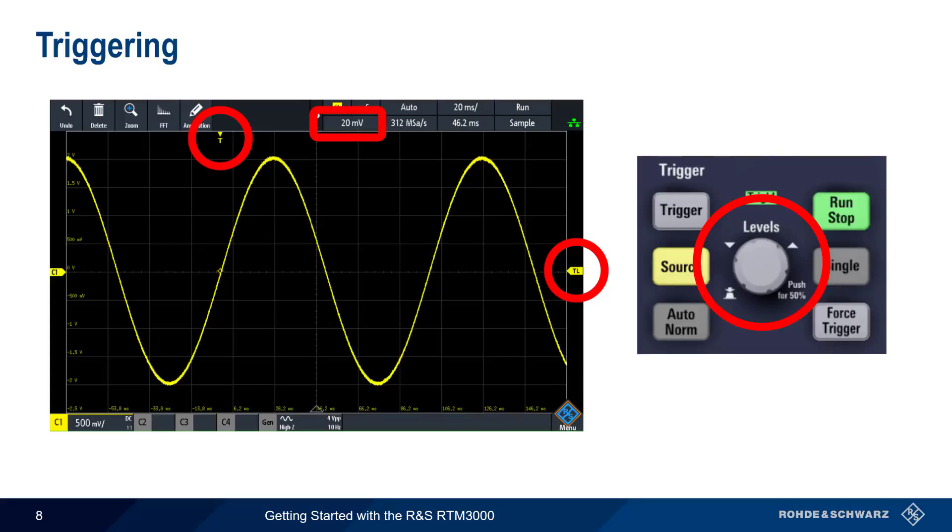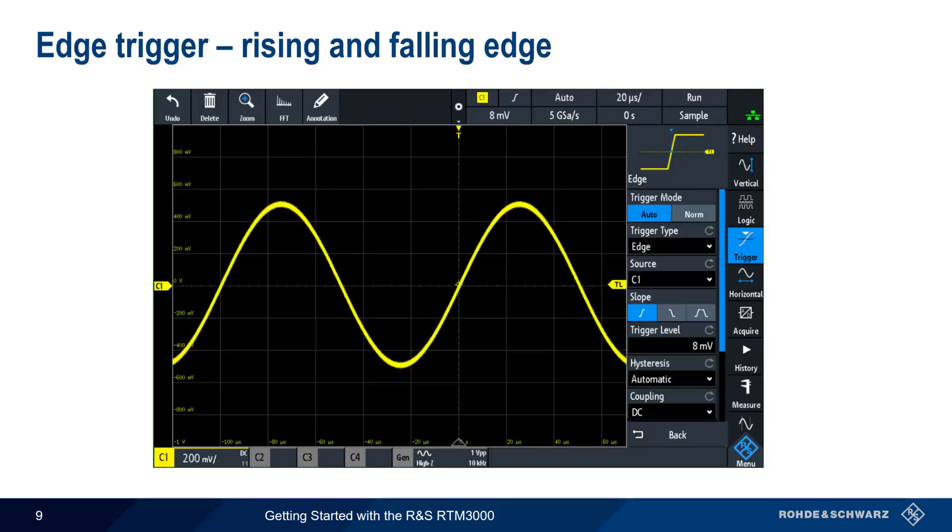The trigger point, that is, where the trigger occurred in the displayed waveform, is marked as well. Note that an edge trigger can be defined either as a rising slope or as a falling slope.